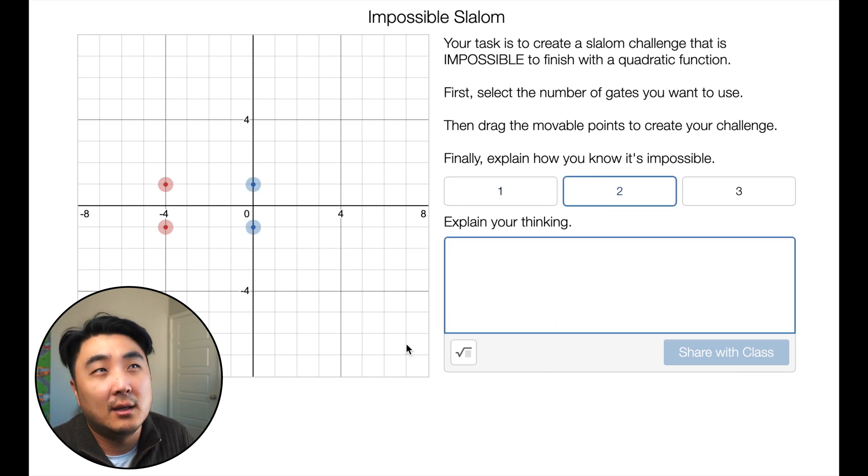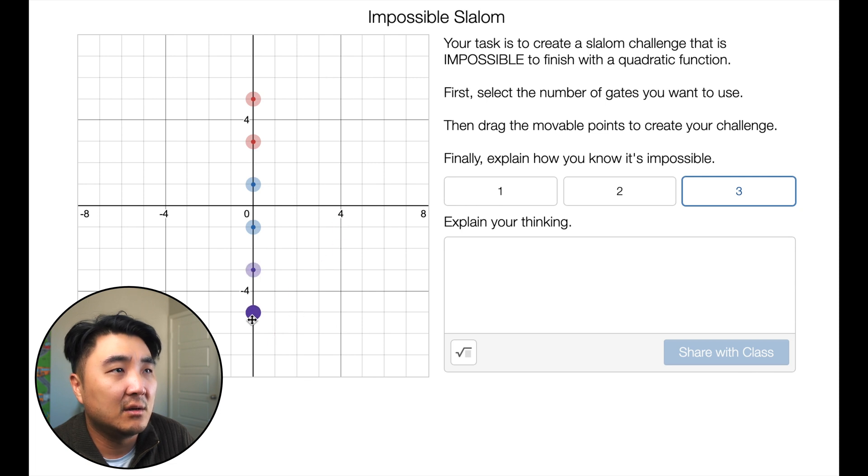Two gates - okay, how do you create an impossible slalom challenge? The one way you could probably do it is if you created a gate kind of like this, that's all on the same x value, right? Because you would no longer have a function. You can't have a quadratic function anymore because you would have two outputs for that one input. So that's probably the only way you can create an impossible slalom challenge using a quadratic function. The third one, I guess again, you just put it in line. You can't - that's one way you can do it, right? Because you would have more than one output for that input. So I think that's the only way to do it for three as well. In any case, as long as you have more than one output, you can't really have a quadratic function do a slalom challenge.